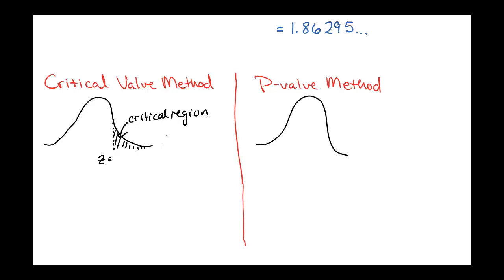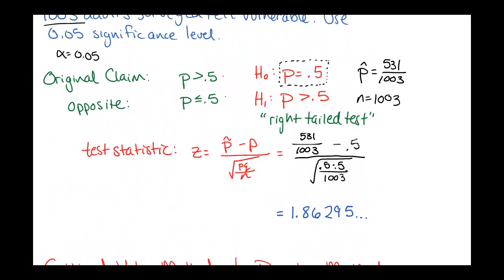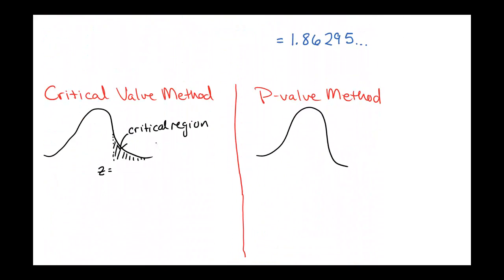So this here is the critical region. And the area of the critical region is our alpha value. So in this case, alpha was 0.05. That's our significance level. So this is area 0.05, which means that we're looking for a z-score that has area to the right being 0.05. The area to the left would then be 0.95. And we can look this up in the z-score table. In this case, if we have area to the left 0.95, that's a z-score of 1.645. And this would be our critical value.